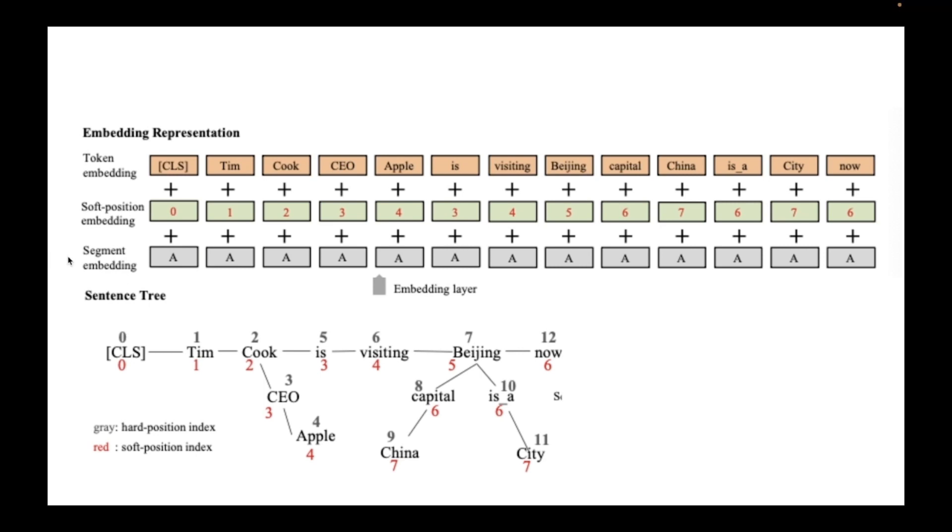So the BERT model also has this segment embedding which is just a way for it to recognize two types of sentences, but we don't really need that in this use case. And we set all these tokens to the same tokens because we're just dealing with one sentence.